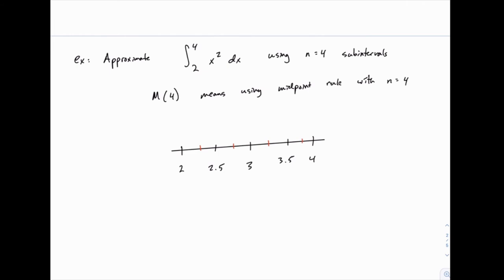So halfway between 2 and 2.5 is 2.25, then 2.75, 3.25, and 3.75. If we needed to, we could find the average of these two values by adding them and dividing by 2, but we can also just quickly see that it's going to be 2.25.